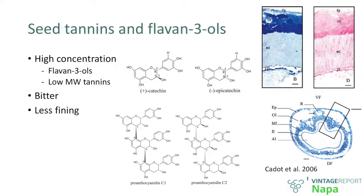Flavan-3-ols are extremely rich at the cellular level, at the seed level, particularly in the Bordeaux varieties — Cab Franc, Cabernet Sauvignon, and so forth. This is actually a cross-section of a Cab Franc. What you see in pink is essentially flavan-3-ols. First and foremost, these compounds are extremely bitter. They cannot precipitate with proteins, but they are extremely, extremely bitter.